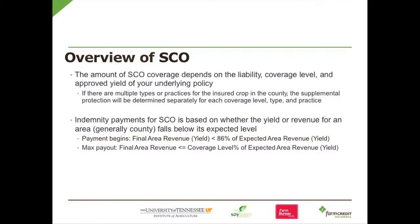The amount of SCO coverage depends on the coverage level and approved yield of the underlying policy. The payment is going to be based on whether the yield or revenue for an area falls below the expected level — that's the trigger. It does have a set trigger of 86%. The maximum payout depends on whether the final area revenue or county revenue is less than or equal to 86% of the expected area revenue.